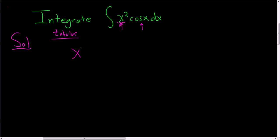To do that, we write down x squared, and then we write down cosine x. And then we just keep differentiating x squared: so 2x, 2, and then 0.